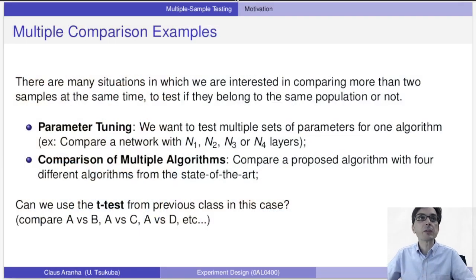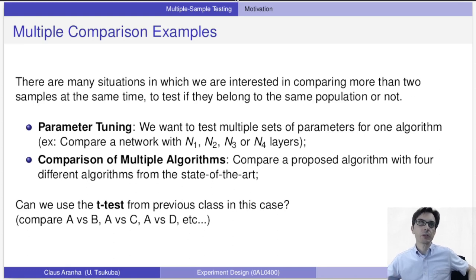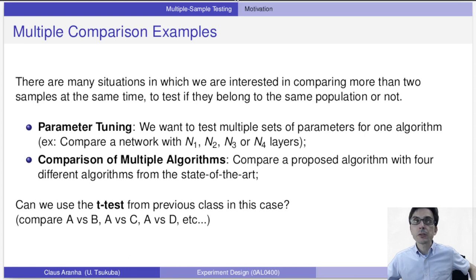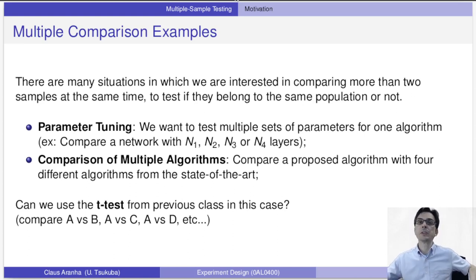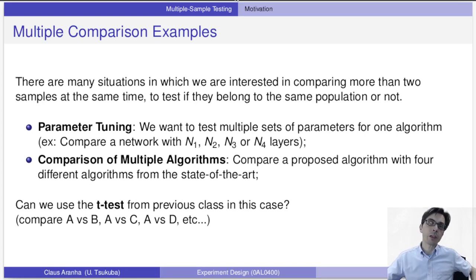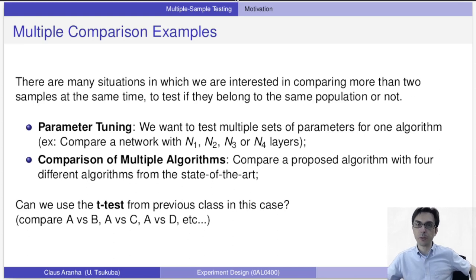There are many situations in which we are interested in comparing more than two samples at the same time, to test if they belong to the same population or not. For example, we may want to compare parameter tuning — for an algorithm we have several values for a parameter, such as testing a neural network configuration with 10, 20, and 30 layers. That would be three different samples to compare. Or we may want to compare multiple algorithms — say we have one algorithm we're developing and we want to compare it against the state-of-the-art, and there are three state-of-the-art algorithms, giving us four algorithms A, B, C, and D.